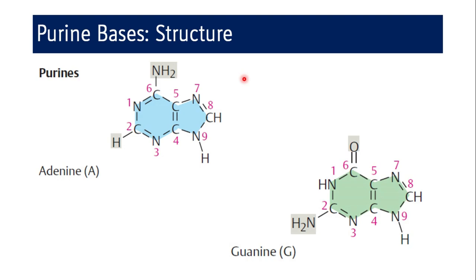Coming to purine bases — if you compare the structure of pyrimidine and purine, you see there are two rings in purine. The complete structure is called the purine ring. A pyrimidine ring fused with an imidazole ring gives the purine ring. The purine bases are adenine and guanine. For adenine, an amino group is attached to the sixth carbon atom, so the chemical name of adenine is 6-aminopurine.